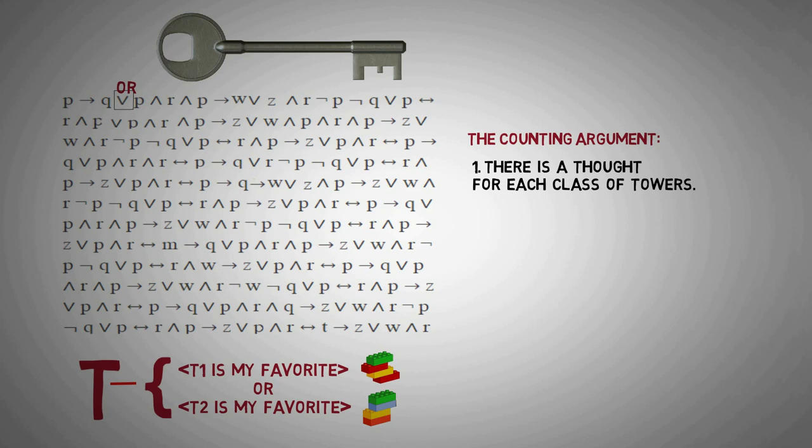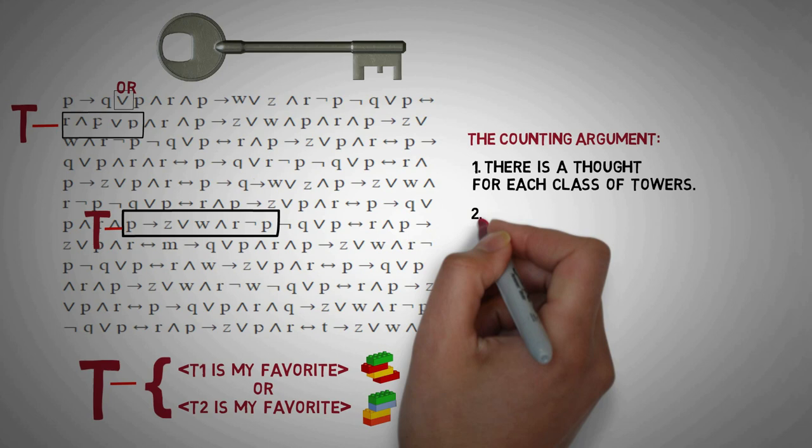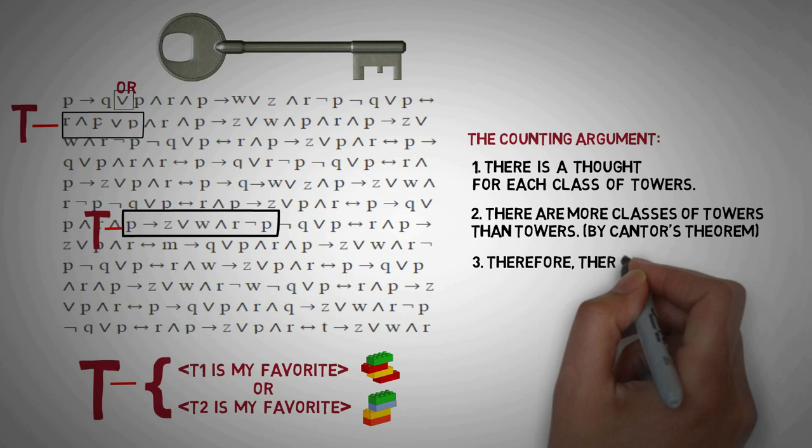Now, both the class of thoughts and the class of towers are infinite. But, by Cantor's theorem, the first infinity is larger because there are more classes of towers than individual towers. Therefore, it follows that the logically possible thoughts outnumber the logically possible LEGO towers.